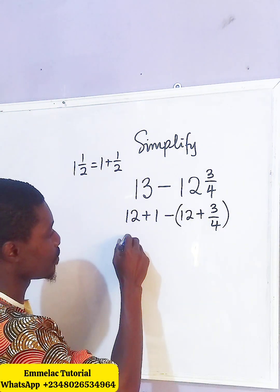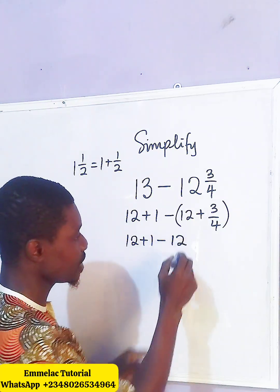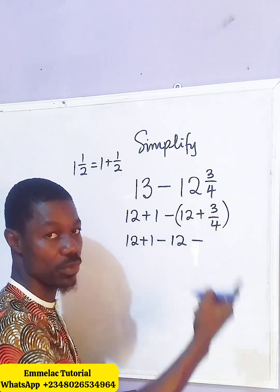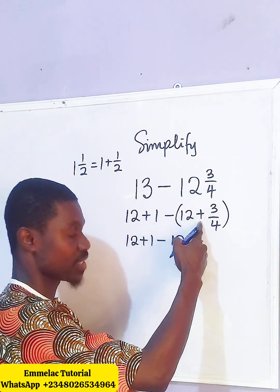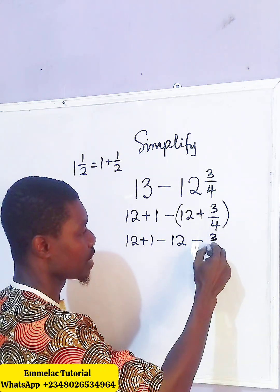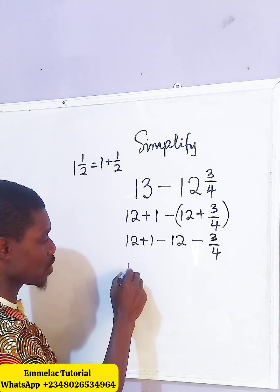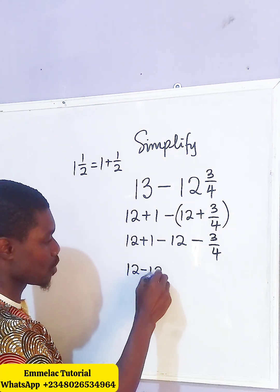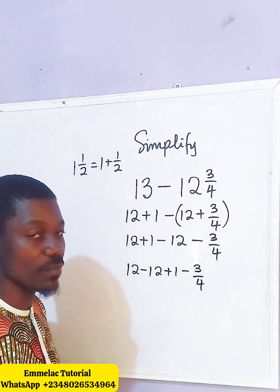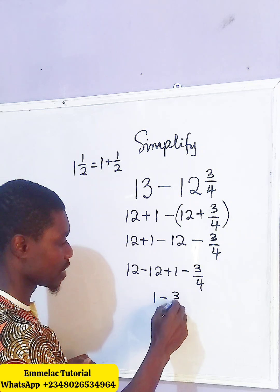So here we have 12 plus 1, minus — now the minus will affect this plus, because minus times plus gives us minus. So we have minus 3 over 4. Now let us collect the two 12s together: 12 minus 12, then plus 1 minus 3 over 4. And 12 minus 12 gives us 0, so we are left with 1 minus 3 over 4.